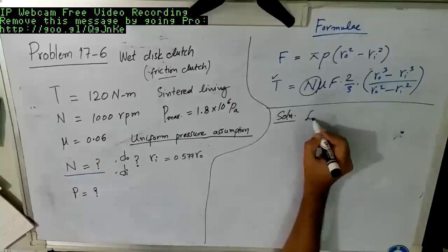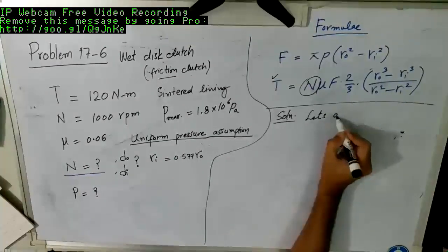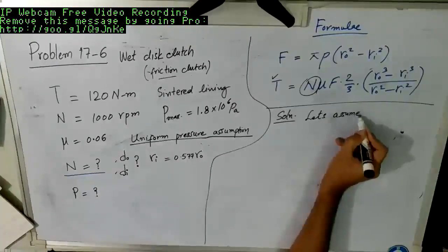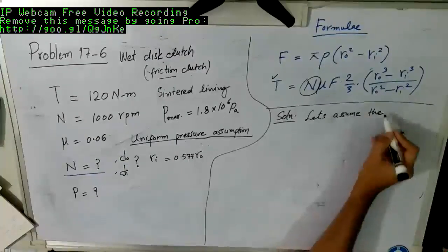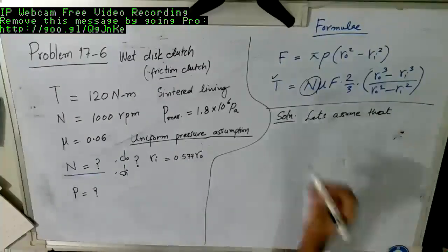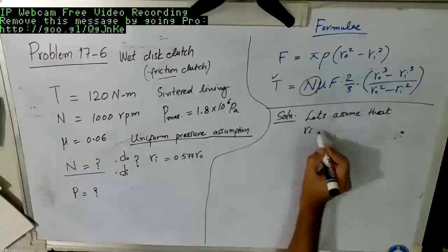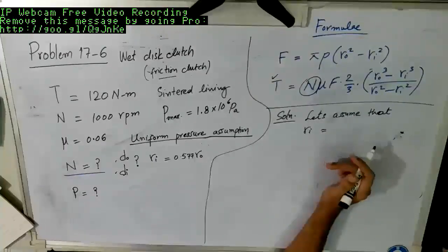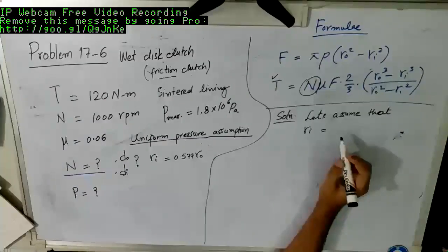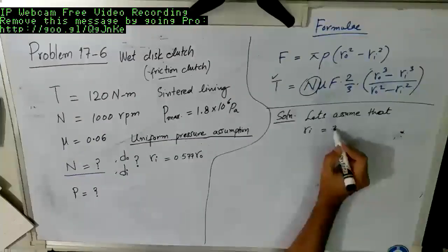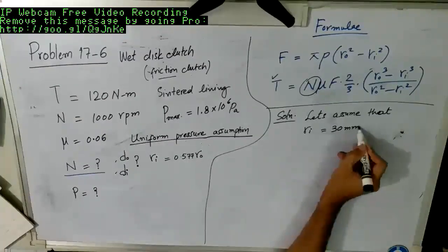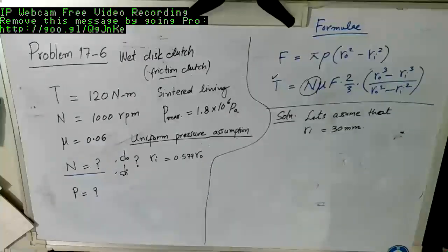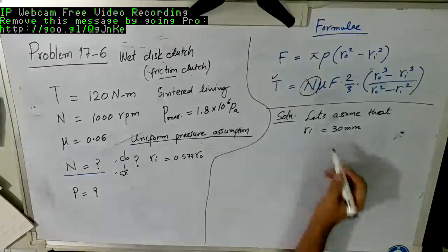Once we have that, we can actually move on to find out the other radius value. So let's assume that R inner is equal to... Now this value can be anything depending upon the application and the experience. I am going to take here a round value of 30 millimeter.